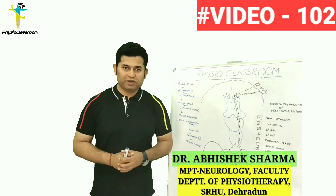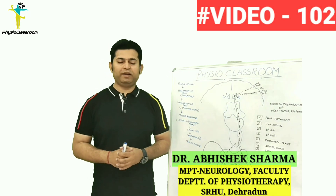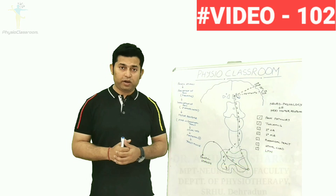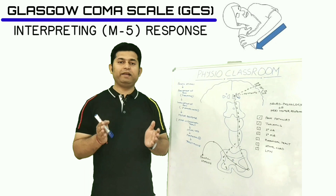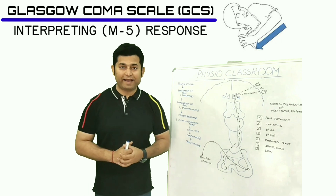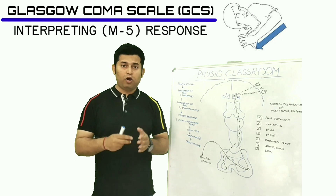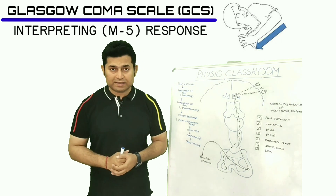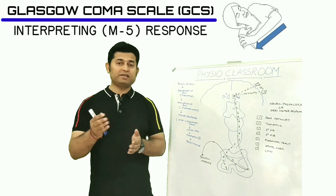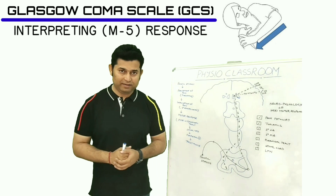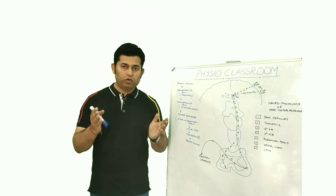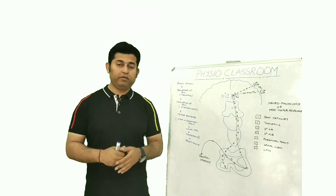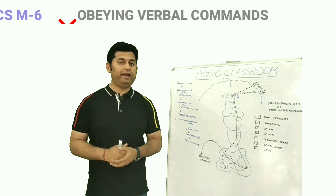Hello everyone, you are watching the Physio Classroom channel. In today's video we are going to cover the neurophysiological explanation of the M5 motor response in the Glasgow Coma Scale. Whenever in a head injury patient we do not find the M6 motor response — that is, the patient fails to obey commands — the physiotherapist next checks for the M5 motor response.